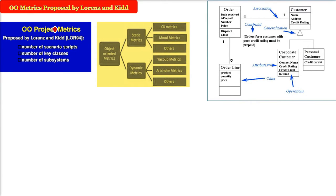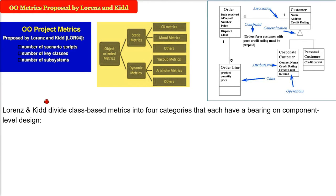Object oriented metrics proposed by Lorenz and Kidd. Lorenz and Kidd divided the class-based metrics, object oriented metrics into four categories and all have relationship or bearing on component level design. These four categories are size, inheritance, internals and externals.